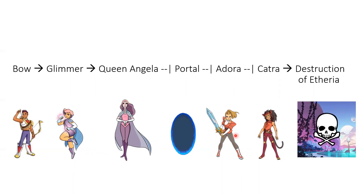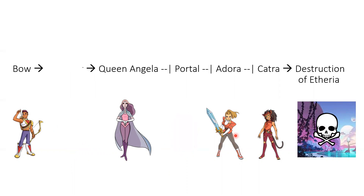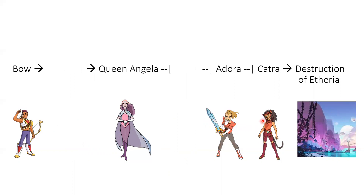Now what if two of them are gone? What if Glimmer was gone, but so was the portal? Well, Queen Angela can't get activated, but since the portal isn't there, there's nothing to stop Adora, and so she can beat Catra. Etheria isn't destroyed.